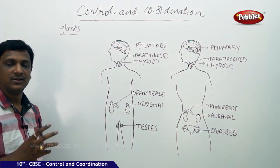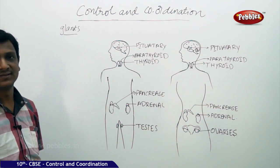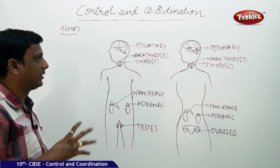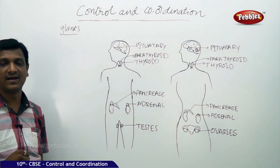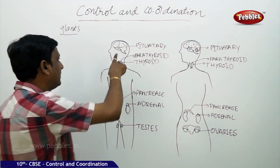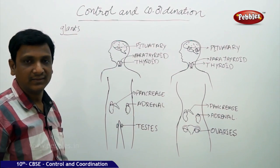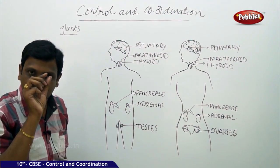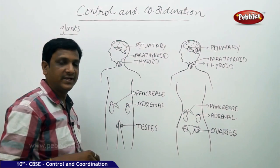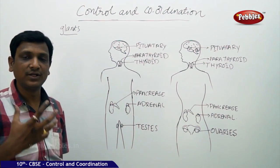Hormones are so effective in affecting the growth patterns of our body. Let us locate where the glands are in our body. Starting with the head: on the floor of the brain, there is a pea-sized gland called the pituitary gland. The pituitary gland secretes hormones like growth hormone, which affects the growth of your body.